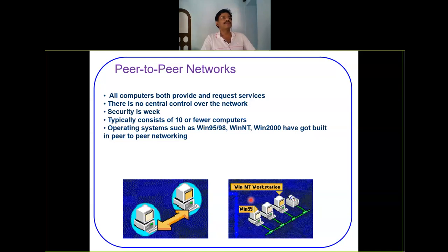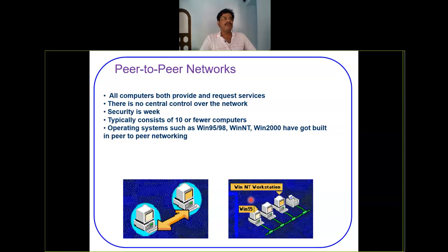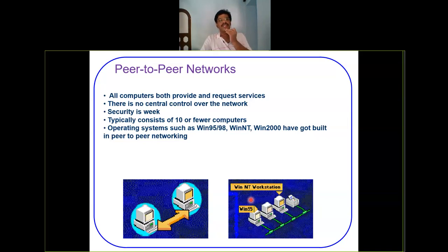In this configuration, all computers both provide and request services — whatever information is available on a terminal or workstation can be provided and also requested. A key advantage is that there is no centralized control. The obvious disadvantage is that since there is no centralized control, security is quite weak. This peer-to-peer configuration was initially used to share resources under one roof, such as a local area network.